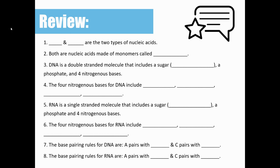Number four, the four nitrogenous bases for DNA include adenine, thymine, cytosine, and guanine. Number five, RNA is a single-stranded molecule that includes the sugar ribose, and then it also includes a phosphate and four nitrogenous bases.